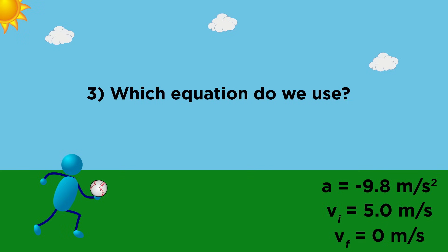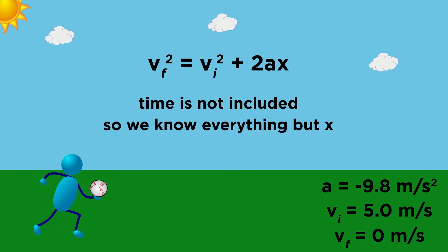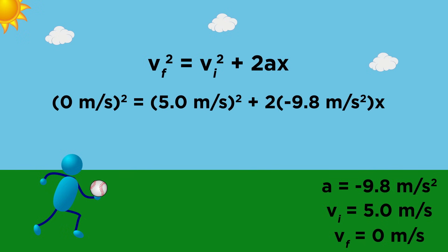So which equation has all the things we know plus the thing we want to solve for? That would be this equation, where final velocity squared equals initial velocity squared plus two AX. This is convenient because time is not present, since we have no value for time. Let's plug in the numbers. Solve for X, and we should get about 1.28 meters as the maximum height of the ball with respect to the point of release.